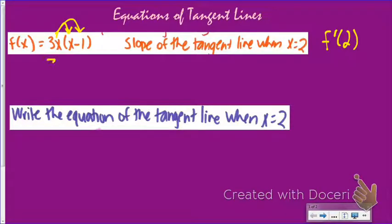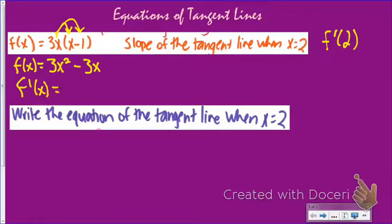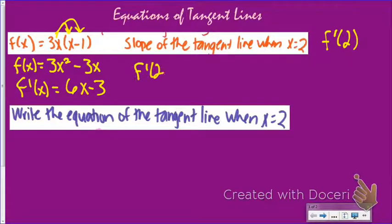I can't use the power rule until I distribute, because I need to have just terms added together. That's my function. Now using the power rule, I can find my derivative. The derivative is going to be 6x minus 3. Because I want to know the derivative at a specific point, I'll plug in 2 to get 12 minus 3, which is 9. So 9 is the slope of the tangent line when x equals 2.